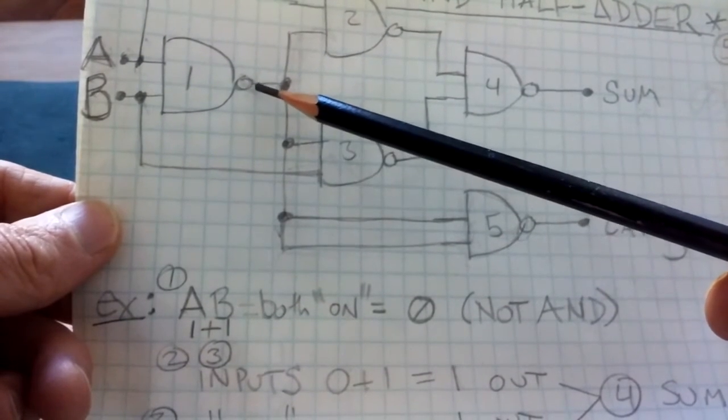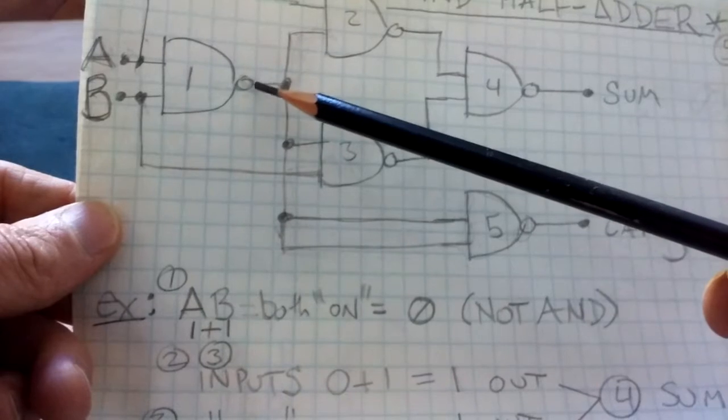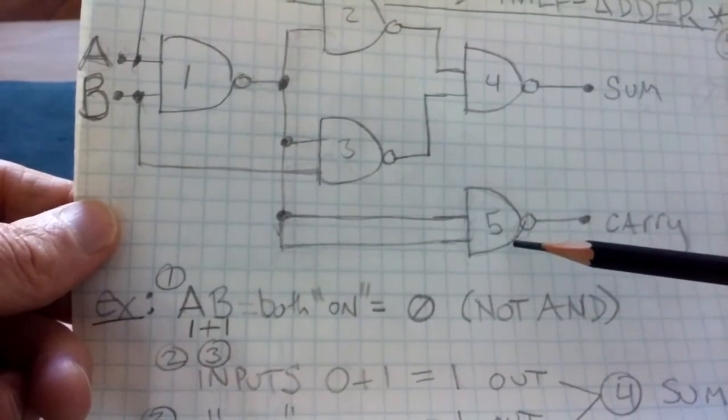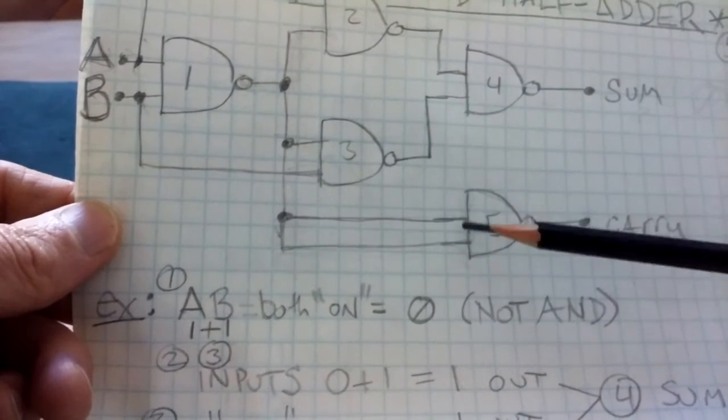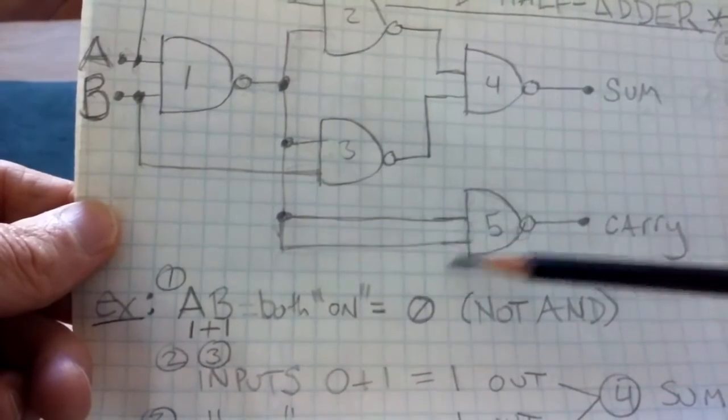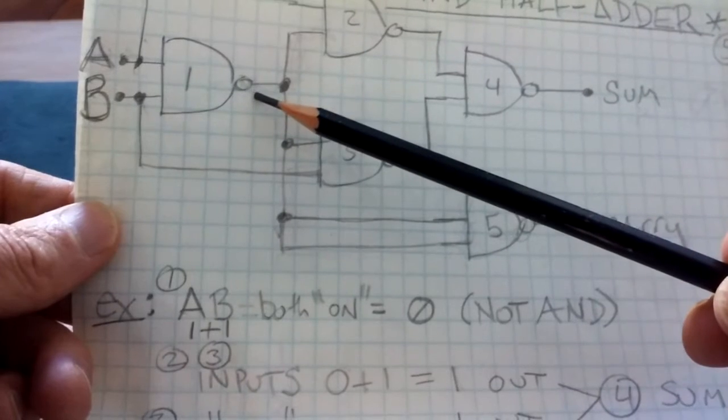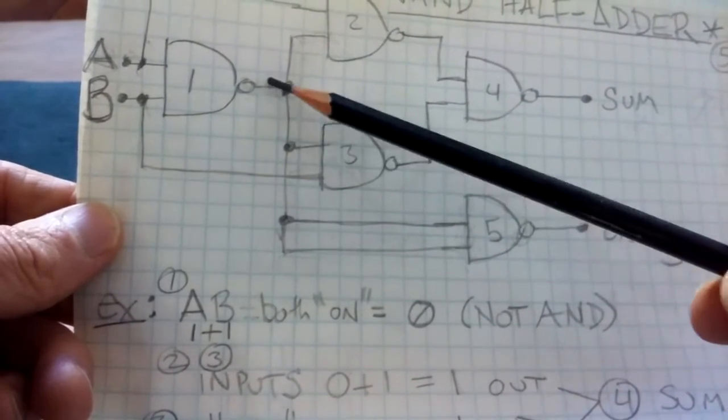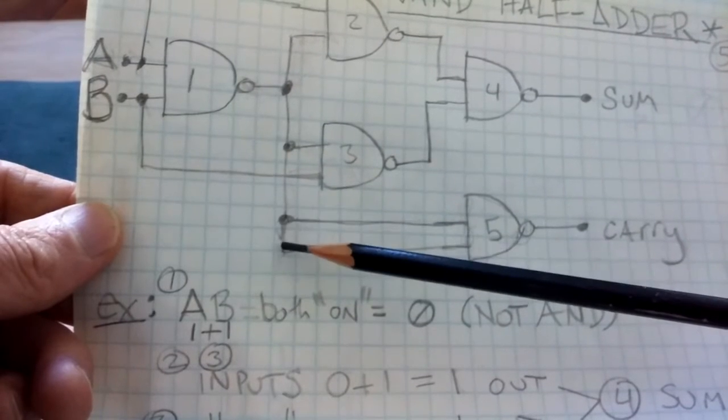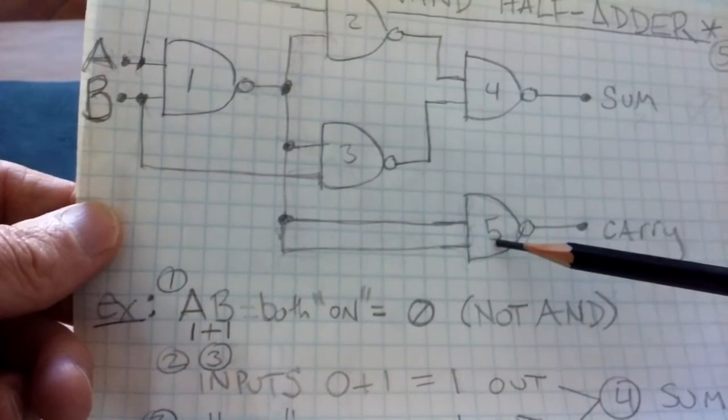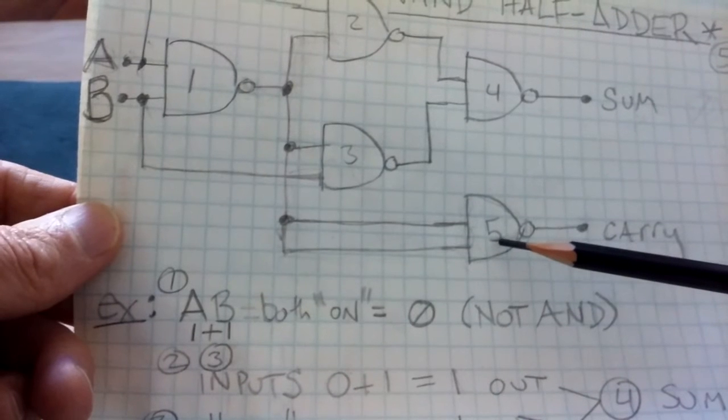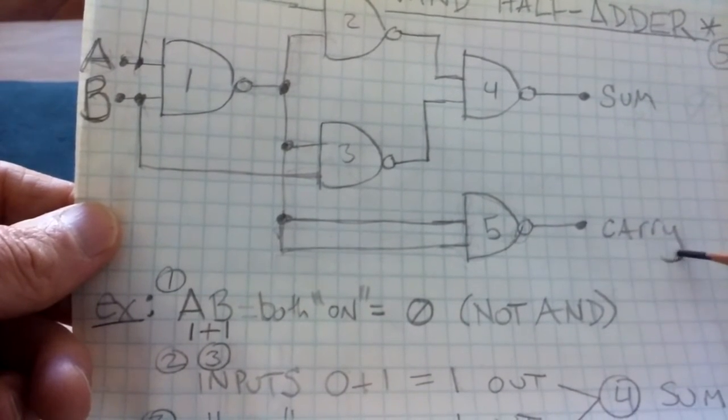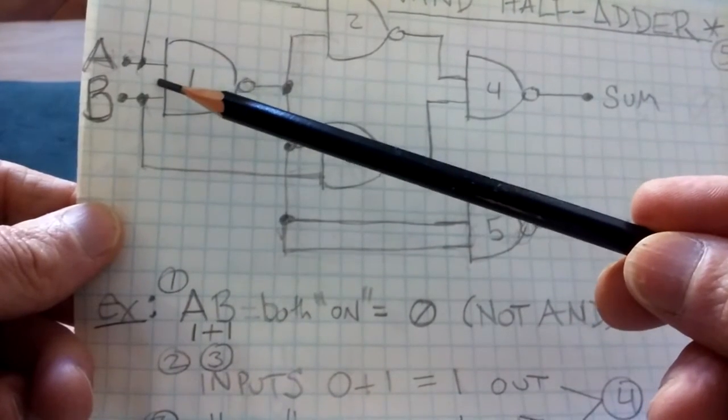So remember our output here is 0, and note that on input 5, or the NAND gate here 5, that both of those inputs are coming from the output of number 1. So we have 0 and 0 going into 5. 0 and 0 in NAND logic is true, or 1, so we have a carry 1. And that makes sense because 1 plus 1 is 2.